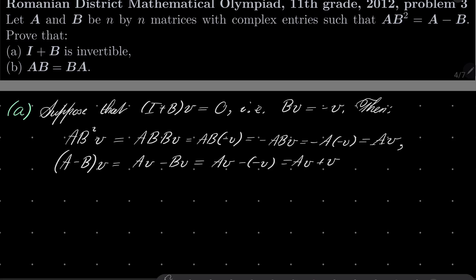But these two things should be equal. And that means, since AB squared equals A minus B, it must be the case that V equals zero.